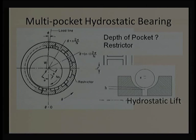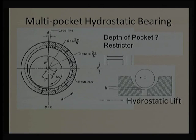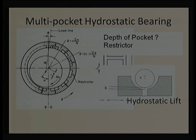To calculate load carrying capacity, we start with analysis for one pocket, then extend to multi-pocket using vector algebra. The flow equation gives how much lubricant is required to levitate the shaft. A shaft of radius r is levitated in a bearing of radius R, giving radial clearance C_R = R − r, floated by oil pumped at supply pressure P_s.